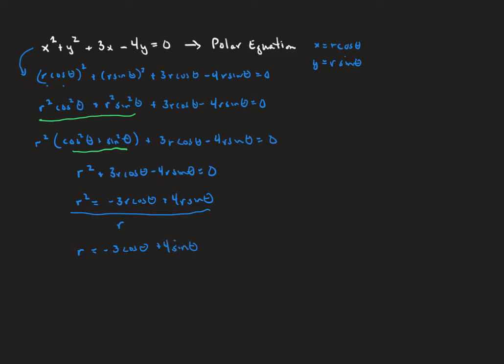We have done what we wanted to do. This is our polar equation. The original equation up here was actually a circle, and we've converted it to r equals negative three cosine theta plus four sine theta.